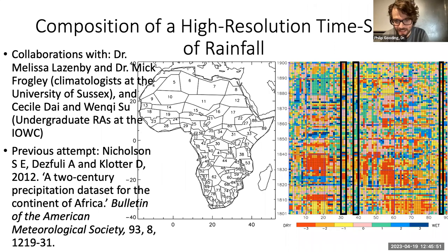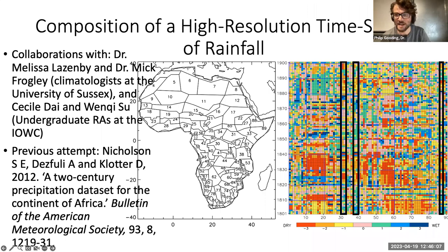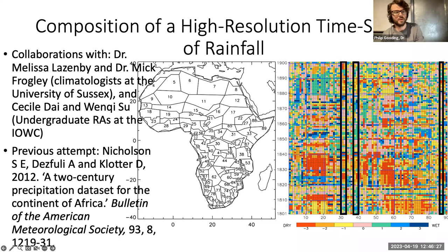The challenge is: can we make a high-resolution time series that gives an indication of seasonal rainfall for at least some of the 18th and 19th century period, indicating both abundant and lean years and seasons? The answer is yes. This has been a collaboration with two climatologist colleagues at the University of Sussex, Dr. Melissa Lazenby and Dr. Mick Frogley, as well as two undergraduate research assistants at the Indian Ocean World Centre, Cecile Die and Wenki Sue.